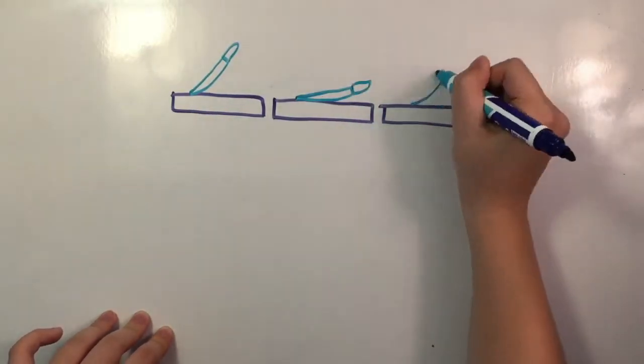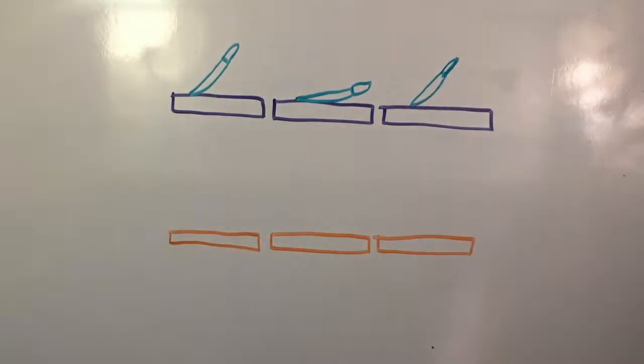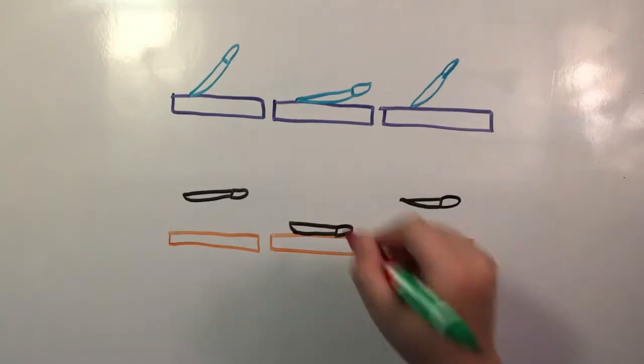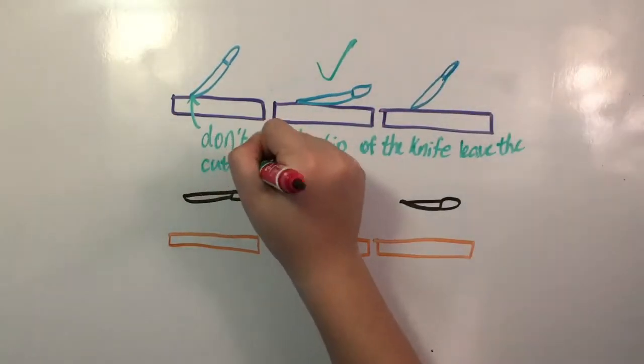Always make sure to use a rocking motion when cutting. Lifting the knife off the board increases the chance of you cutting something that isn't edible, you know, like your thumb.